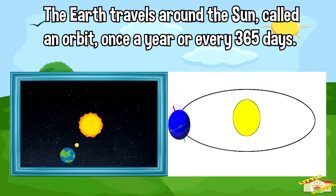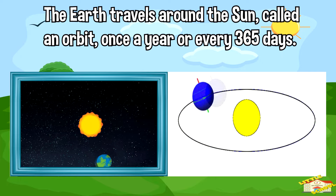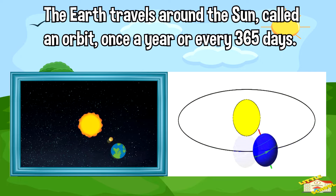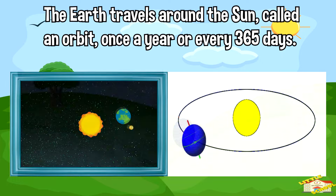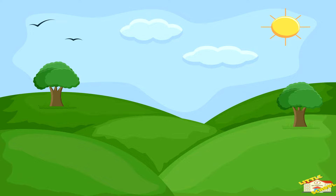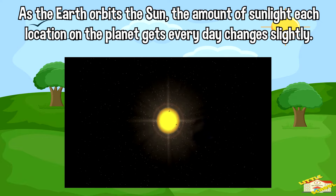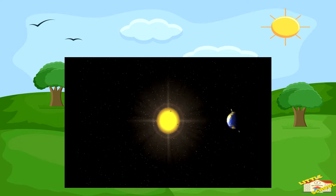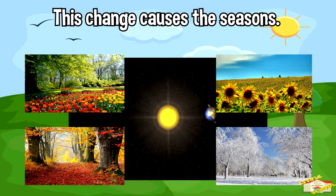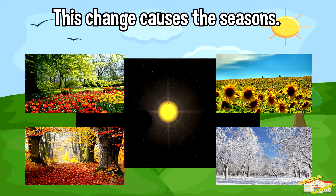The earth completes one orbit once a year, or every 365 days. As the earth orbits the Sun, the amount of sunlight each location on the planet gets every day changes slightly. This change causes the seasons.